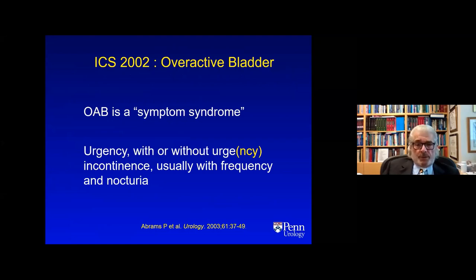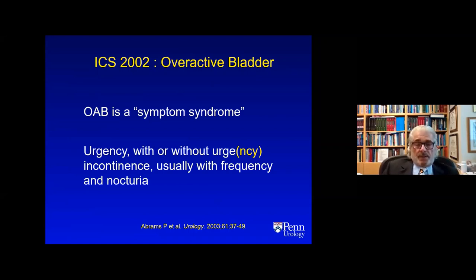The original definition formulated by the International Continence Society in 2002 defined OAB as a symptom syndrome — not a disease, not a condition — consisting of urgency as the key word, with or without urgency incontinence (originally called urge incontinence, but we recognized later that urge is a normal sensation whereas urgency is not), usually with frequency and nocturia.